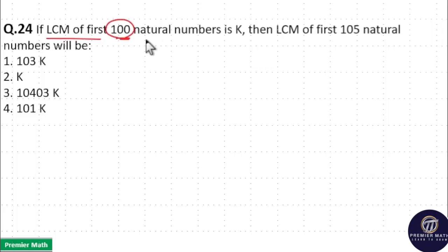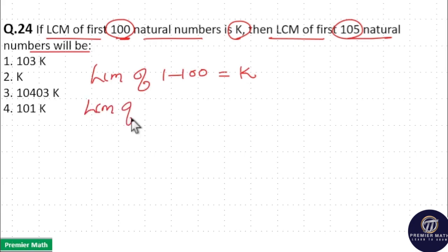If LCM of first 100 natural numbers is K, then LCM of first 105 natural numbers will be? Here LCM of 1 to 100 numbers is K. Then we have to find out what is the LCM of 1 to 105 numbers.